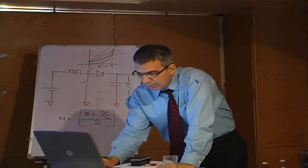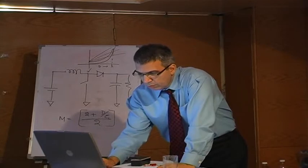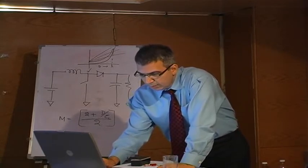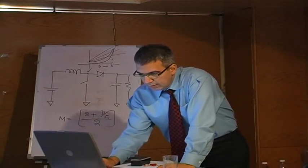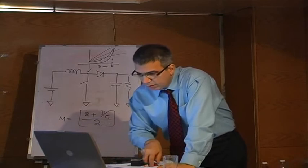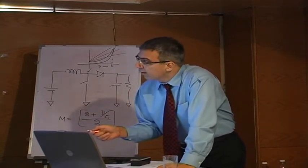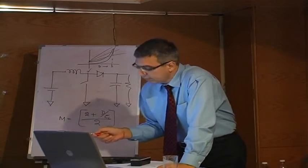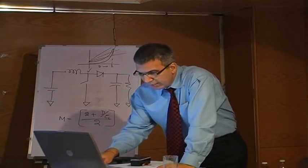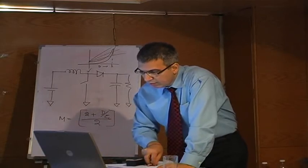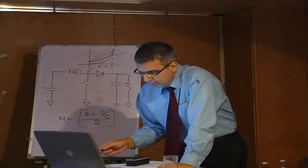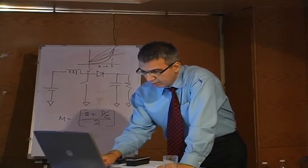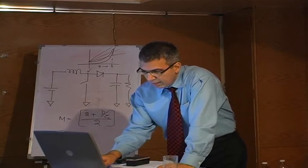So it's the buck-boost. Similar equations — we go through all the waveforms and determine the values of R-critical and L-critical. Here are some simulation results: L of 2 millihenry, C of 20 microfarad, R of 20 ohms, and a switching frequency of 100 kilohertz. We basically have about minus 40 volts output. This is cycle by cycle, and this is your inductor current. Then in the average switching model you have similar results.